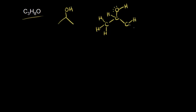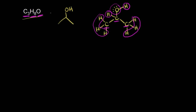Let's count everything up. We have one, two, three carbons — C3. Three hydrogens plus three is six, plus one is seven, plus the hydrogen on the oxygen makes eight. So we have eight hydrogens and one oxygen. The molecular formula is C3H8O. If I number this as carbon one, carbon two, and carbon three, that helps us draw the next structural isomer — because instead of the OH coming off of carbon two, we can put it on carbon one.